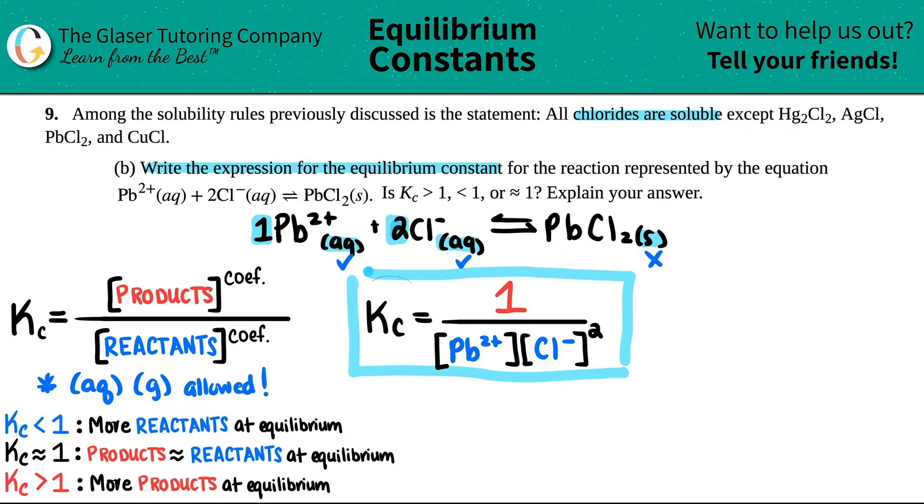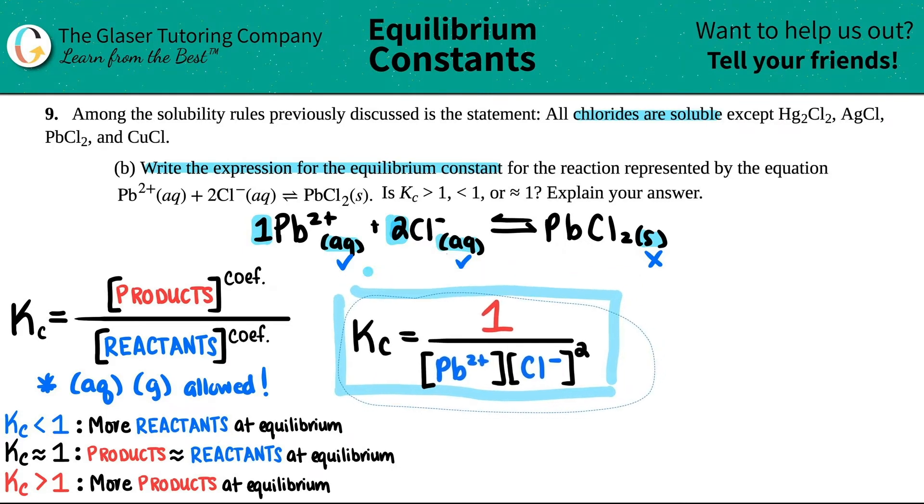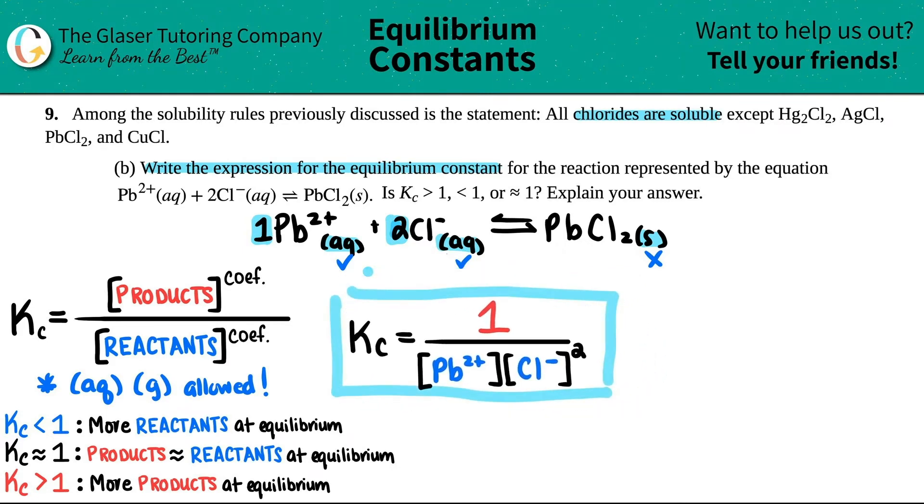Now let's go on to the next part. So we got that. Now we're saying, okay, is this Kc value going to be greater than 1, less than 1, or roughly around 1?